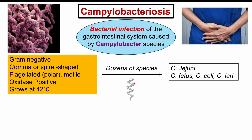There are dozens of Campylobacter species. These include Campylobacter jejuni, which is the most common and the most commonly implicated in infections. There's also Campylobacter fetus, Campylobacter coli, and Campylobacter laeri. Campylobacter laeri can be found in seagulls, and this can be an important cause of Campylobacter infections in children, especially those exposed to seagulls and seagull droppings.